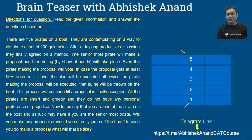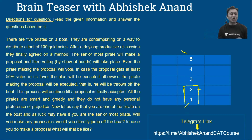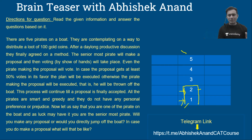Now think: if only two pirates remain on the board, what will happen? All pirates are smart and greedy. If pirate number two is making a proposal, he needs 50% of votes — so he votes for himself and the proposal is accepted. So his proposal would be: 100 coins to myself and zero coins to pirate number one. When these two are remaining, pirate number one knows he will get zero if pirate two proposes. So the two-pirate outcome is: pirate 2 takes 100, pirate 1 gets 0.